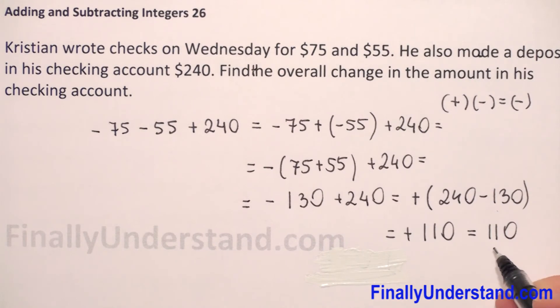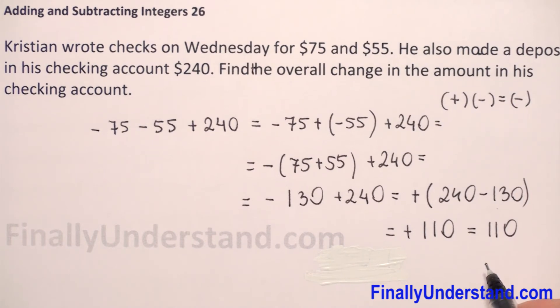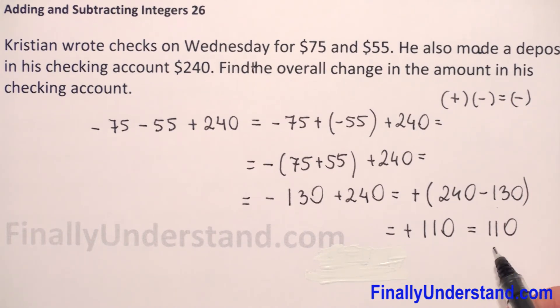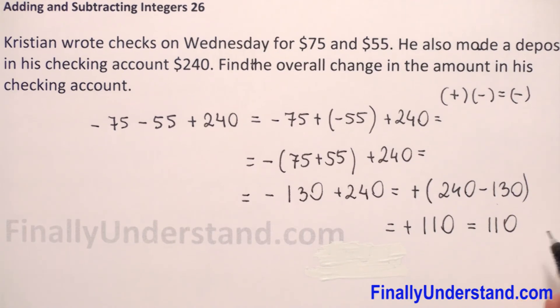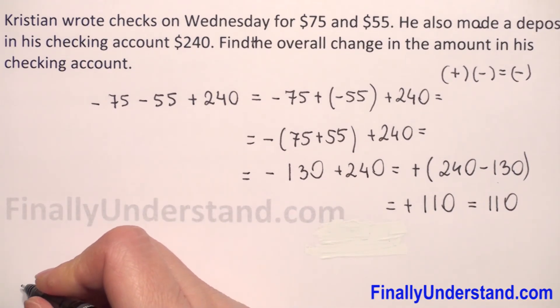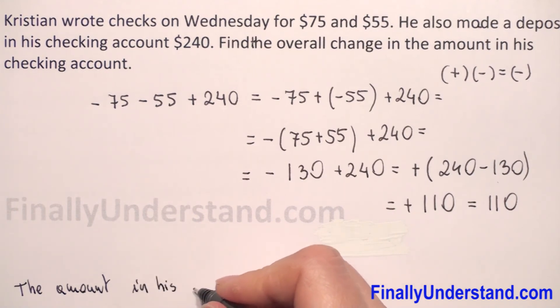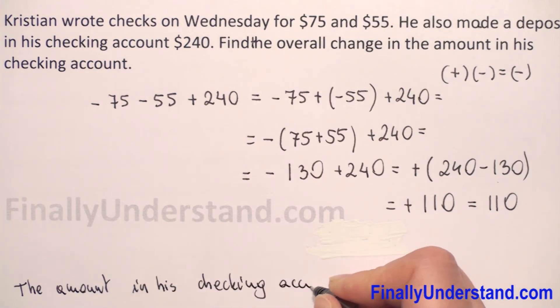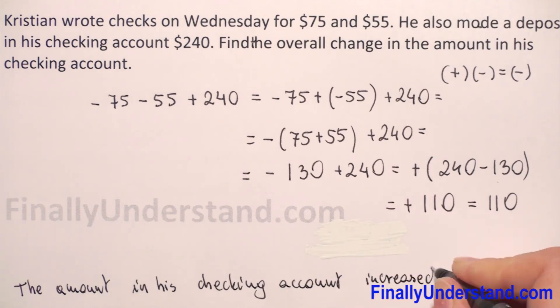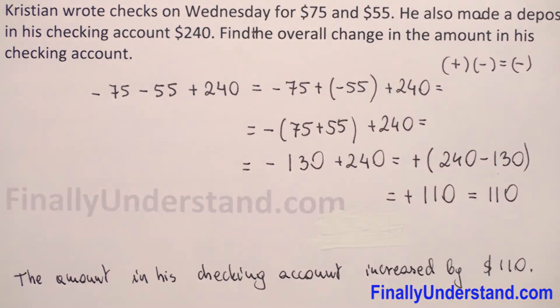We got positive number 110. It means that the amount in his account increased by 110 dollars. So we can write that the amount in his checking account increased by 110 dollars. This is my solution.